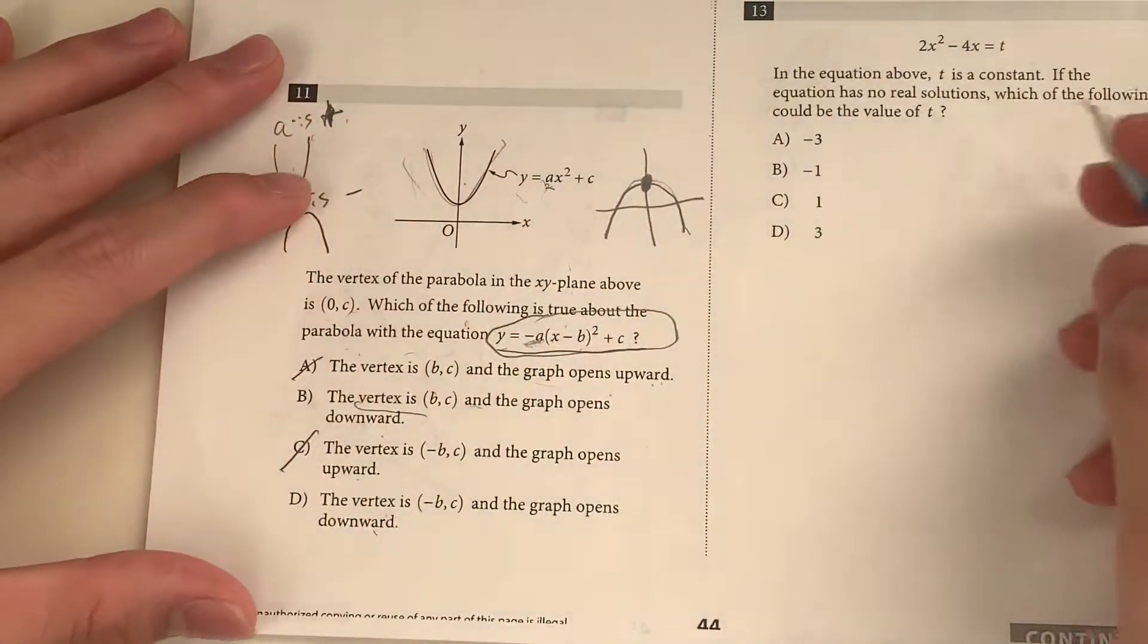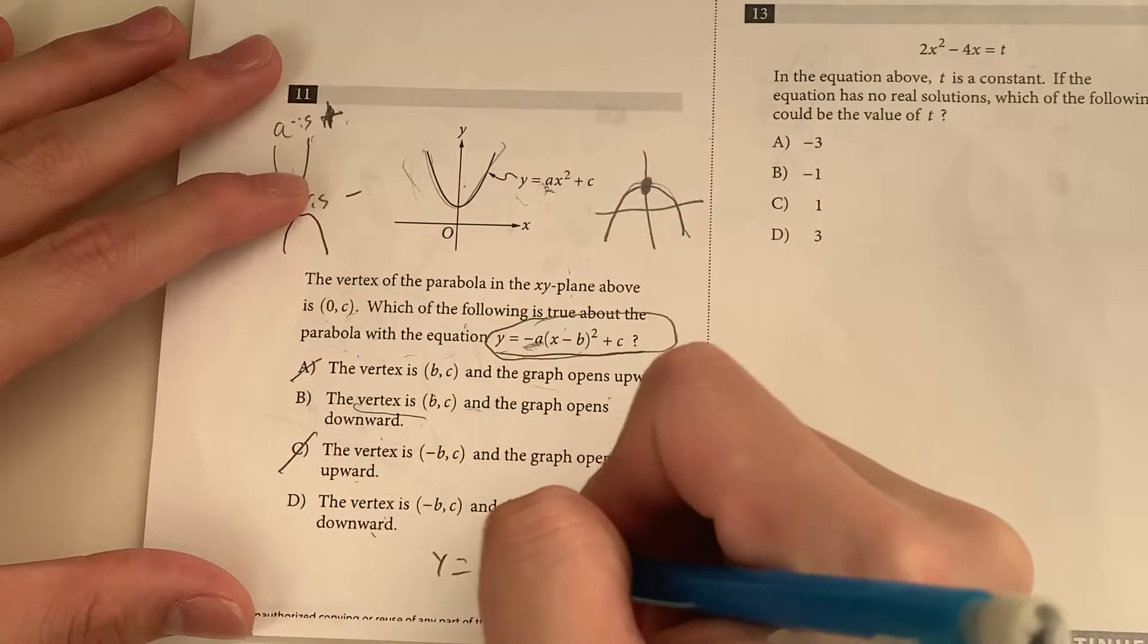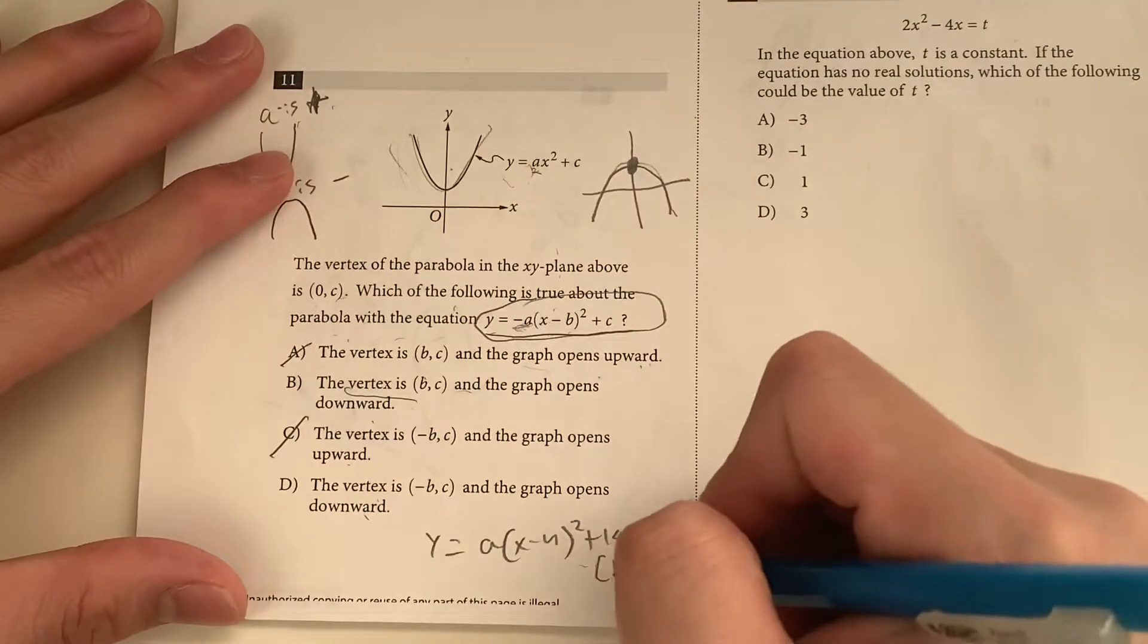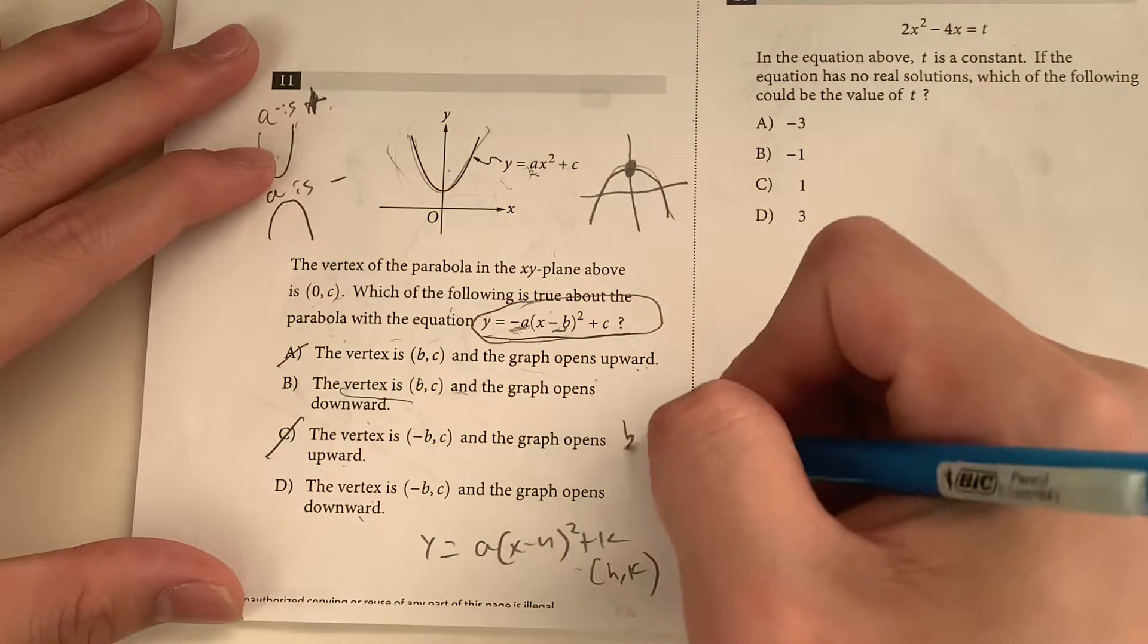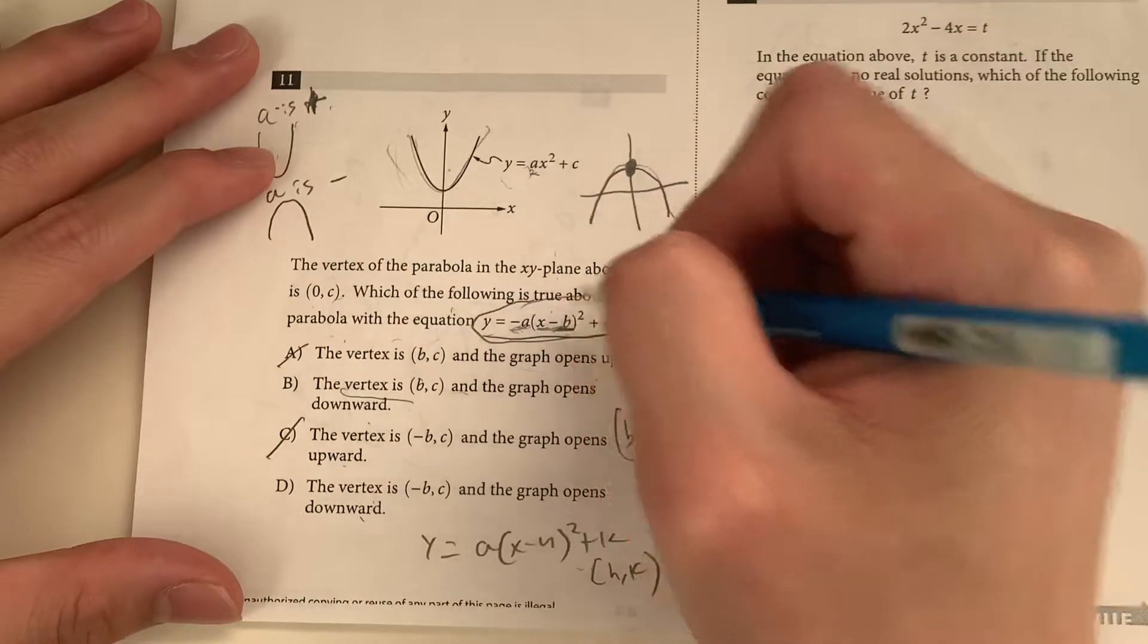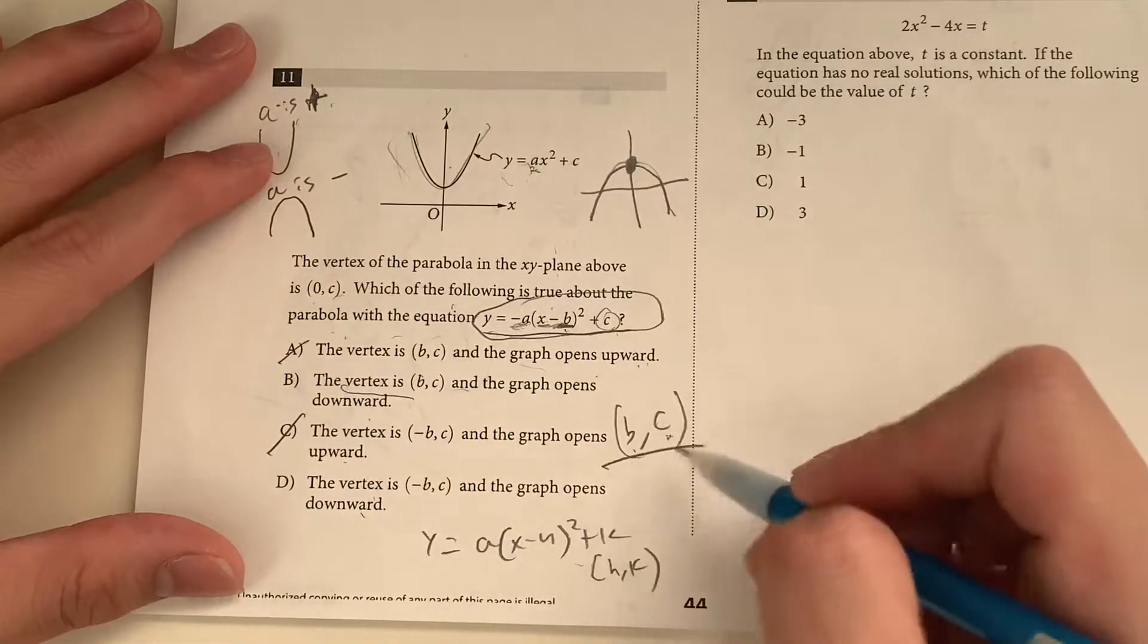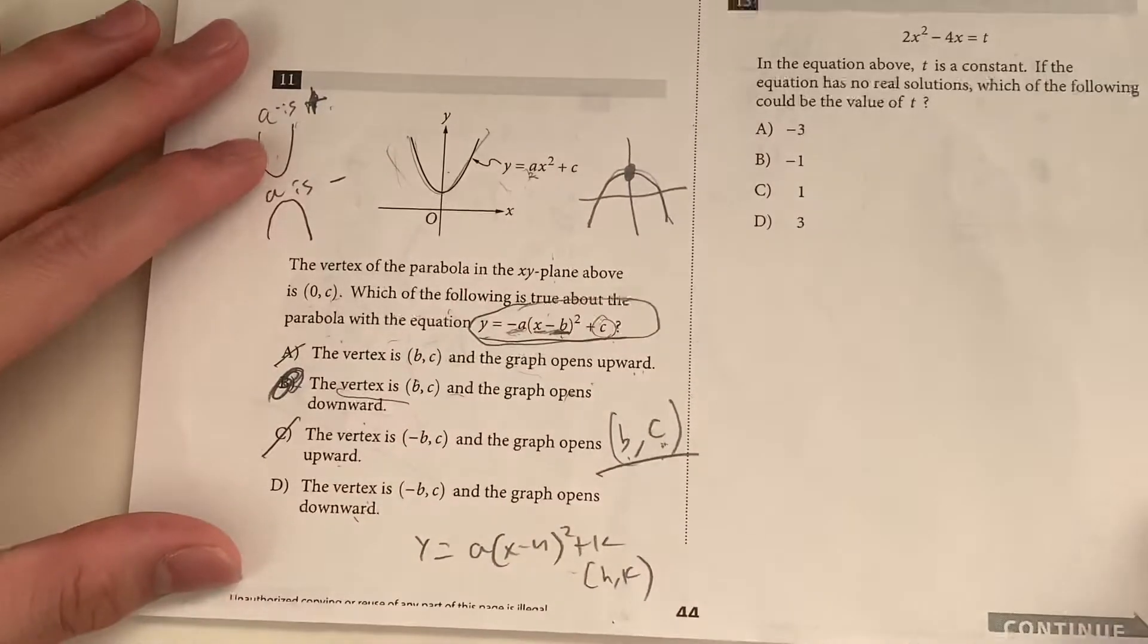So we're talking about the vertex. So this right here is put in vertex form, right? Y is equal to A times x minus h squared plus k, where hk is going to be your vertex. So in this case, your vertex is going to be B comma C. It's going to be this value attached to the x minus B, and then this is going to be your y value, which is C. So your vertex is B, C, and it opens downwards, meaning your answer has to be choice B.